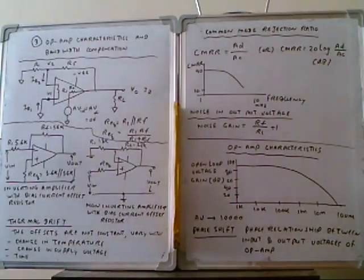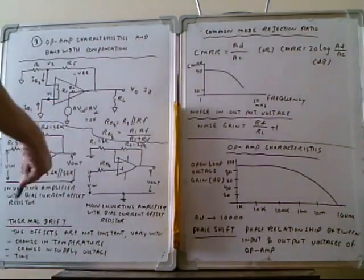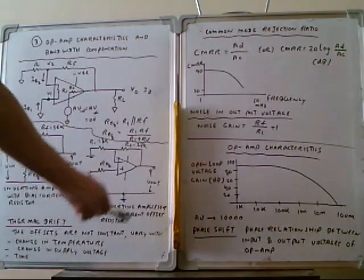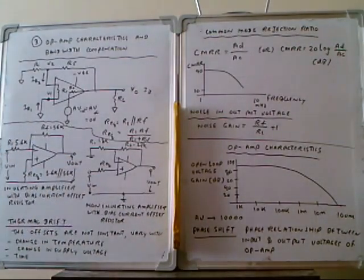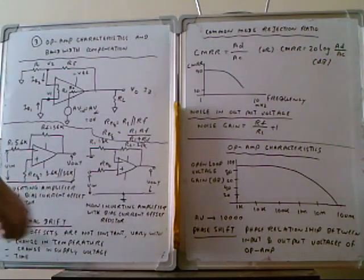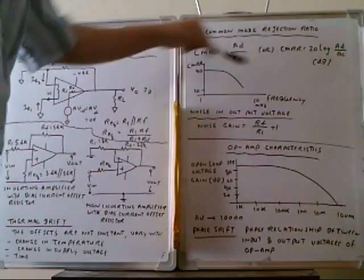In the operational amplifier, sometimes the output voltage or output gain will change. This is what we call Drift. Drift means that the offsets are not constant — they vary with changes in temperature, supply voltage, and time. When temperature, supply voltage, or time changes, the output voltage will change. This is what Drift refers to — it is about the offset of the op-amp.